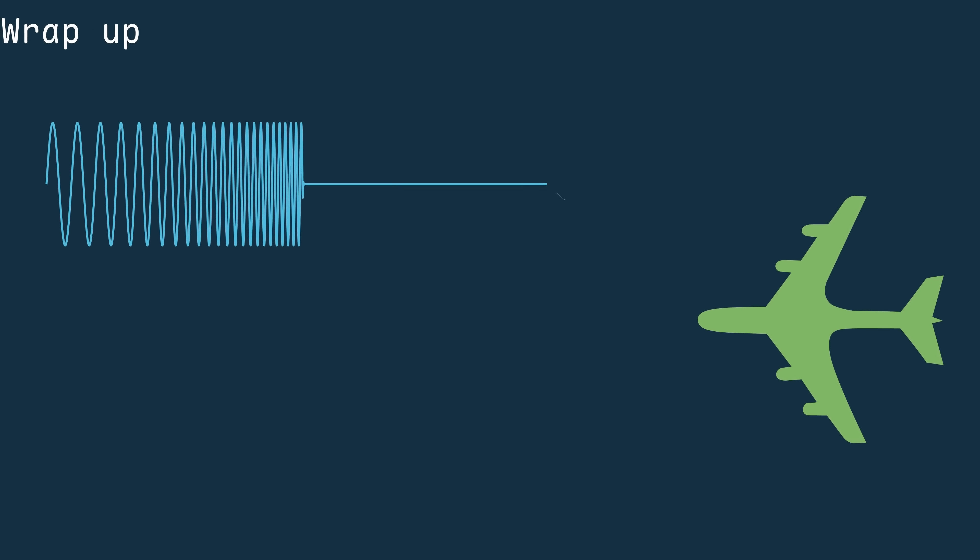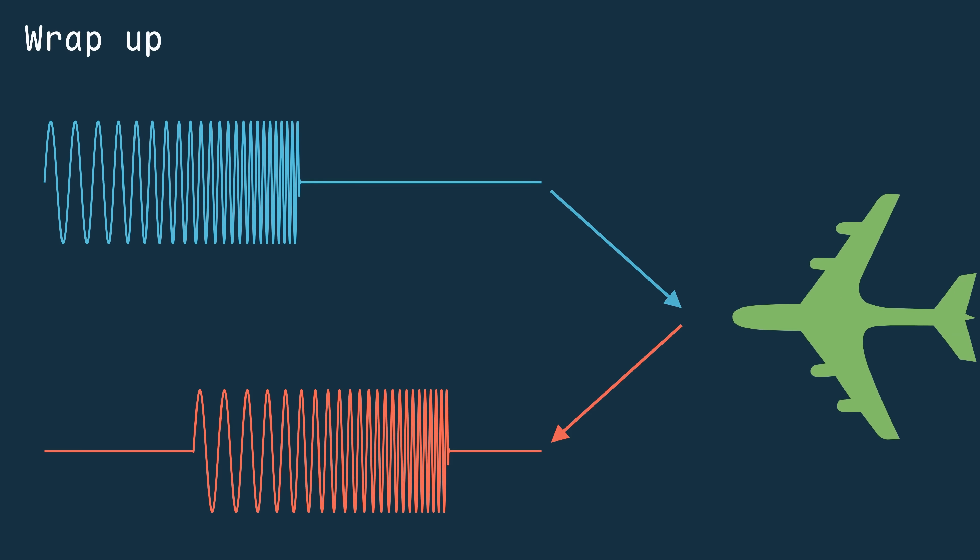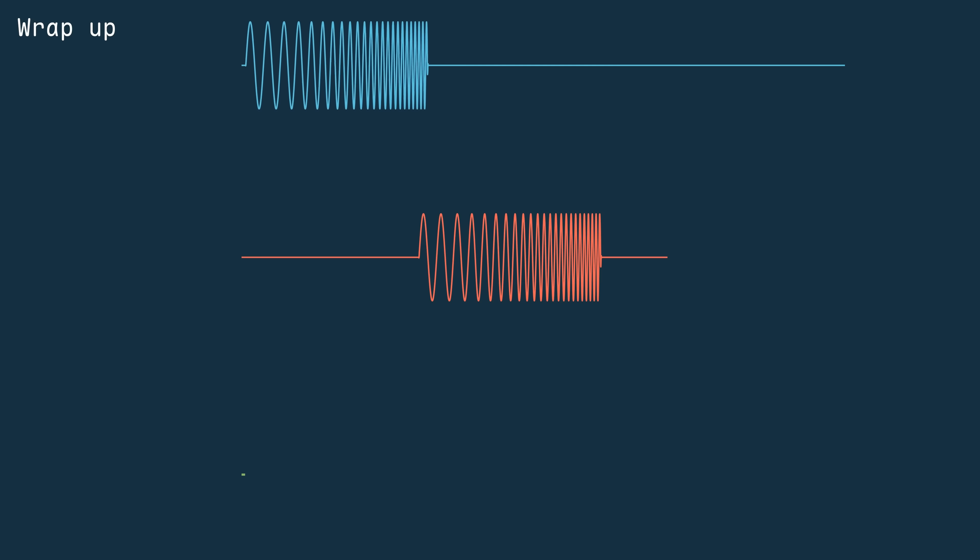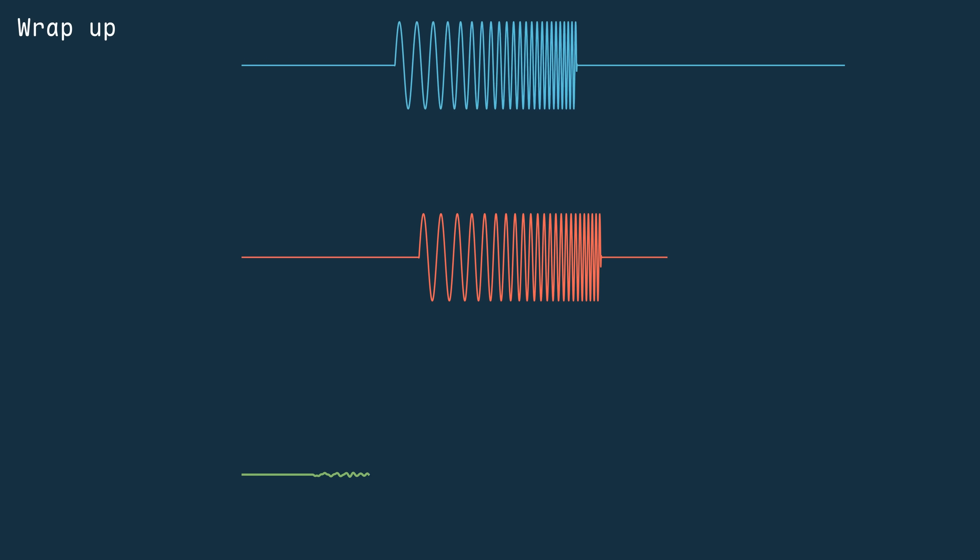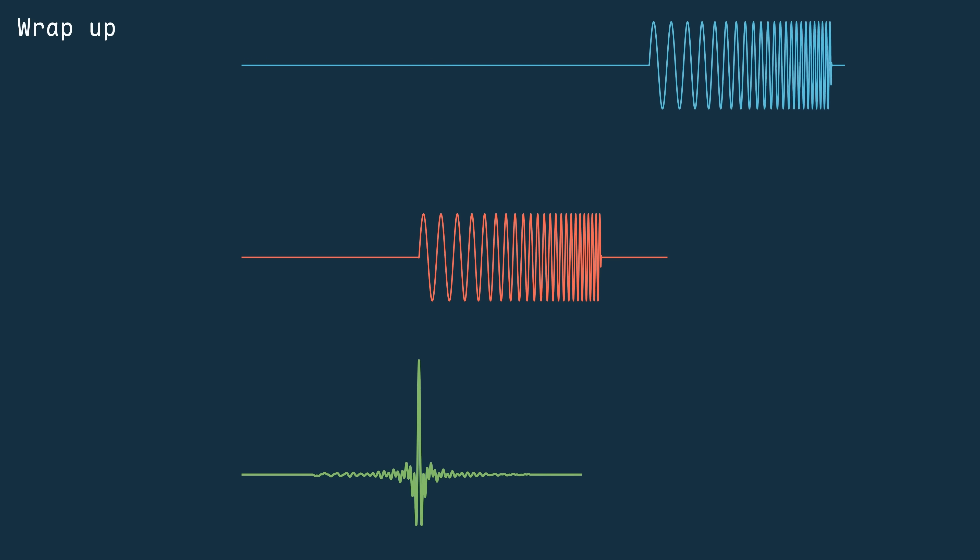wait for it to reflect off one or more targets, and correlate the transmit and receive signals to pull out thin, high signal to noise ratio peaks for each target.